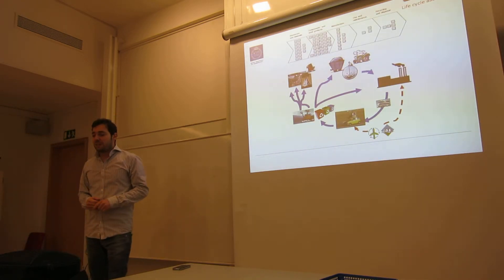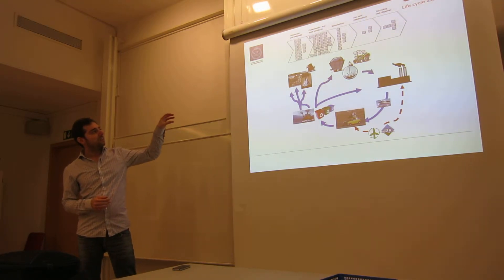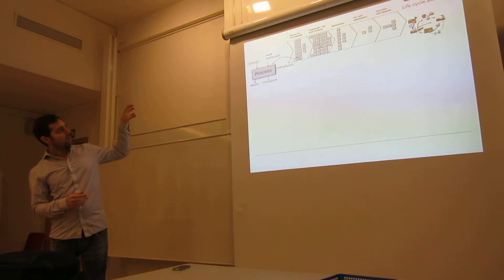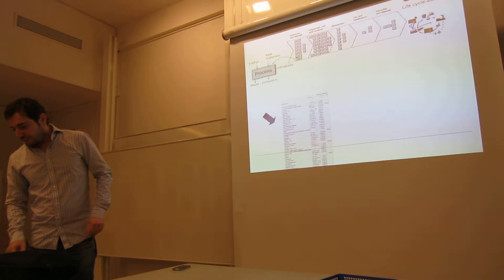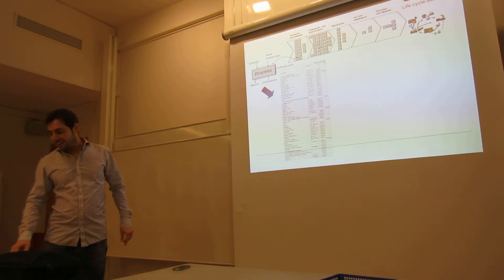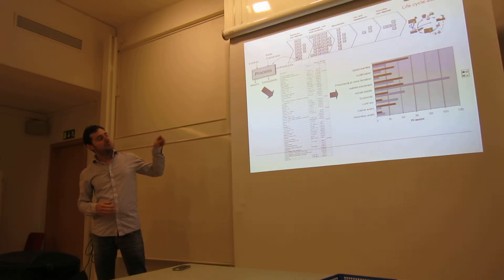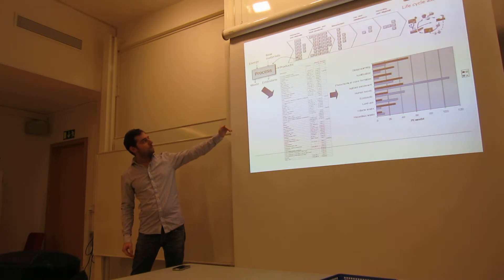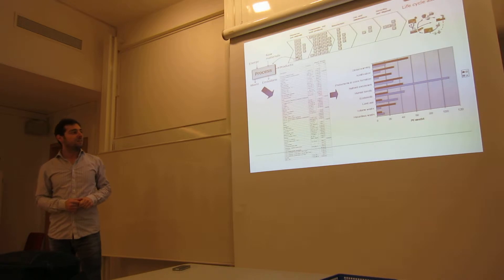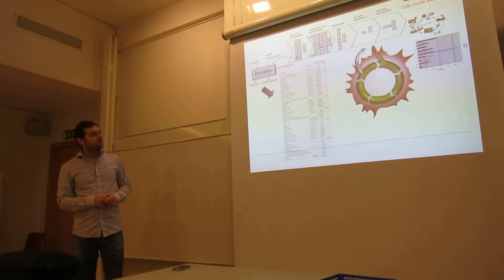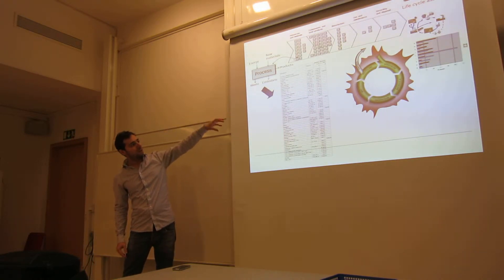LCA accounts for all the processes in each stage and computes the inputs, outputs, and the energy required for each of those processes, then compiles it in a table — the software can do this. Then you do the impact assessment using methods that have formulas for calculating each contribution of inputs or emissions to the categories. Depending on the method you have different categories. Then you identify the hotspots — which process is contributing most in the life cycle stages.